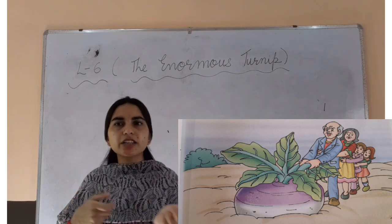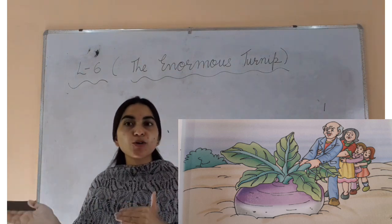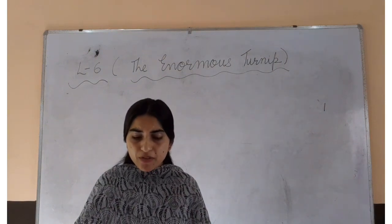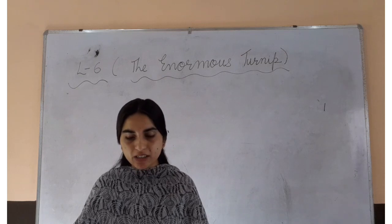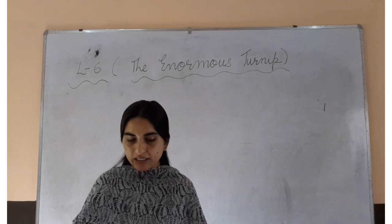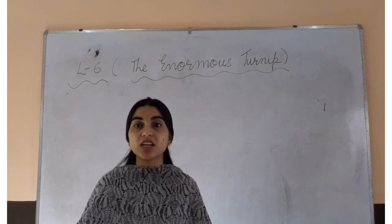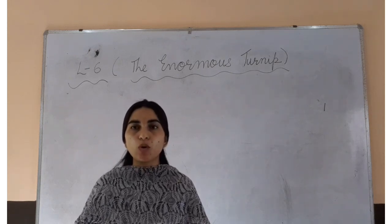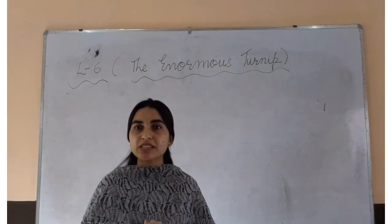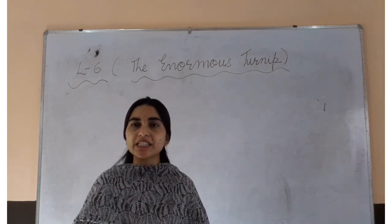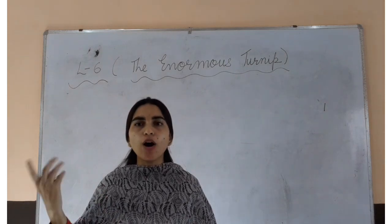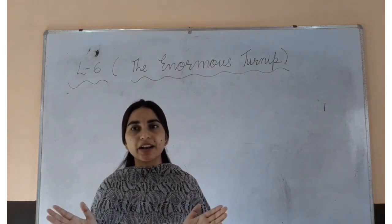They are pulling the enormous turnip — the old woman, the boy and the girl. They take the enormous turnip and pull it up. After pulling out that enormous, big, huge turnip, the old woman said that we will help you to eat it. The boy also agreed and the girl also agreed. So they all ate that big, huge, enormous turnip.